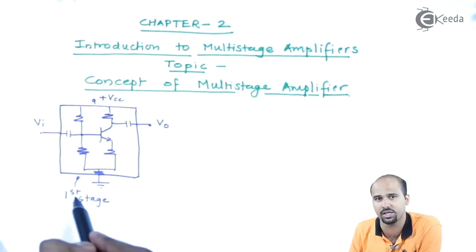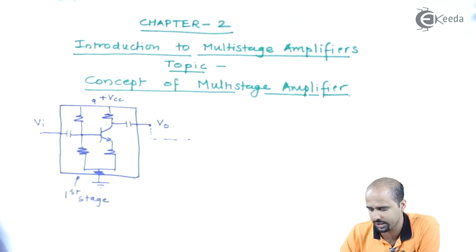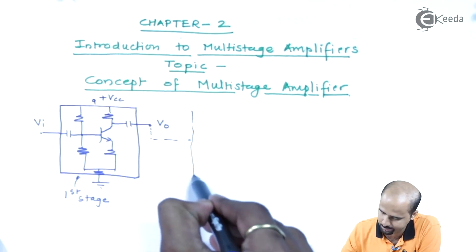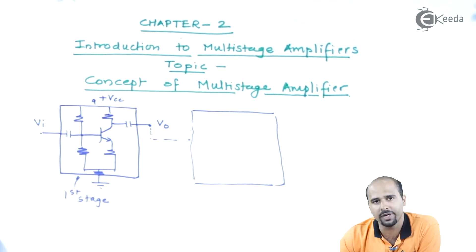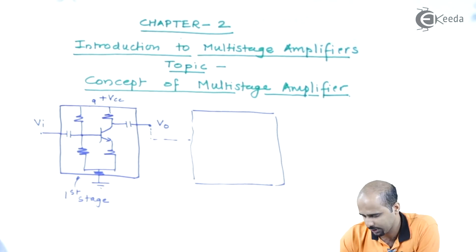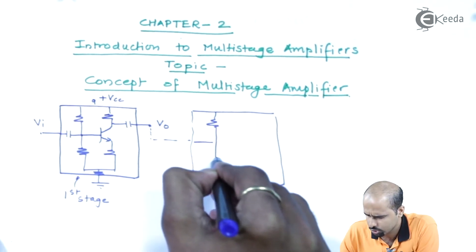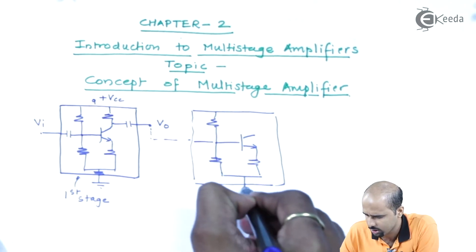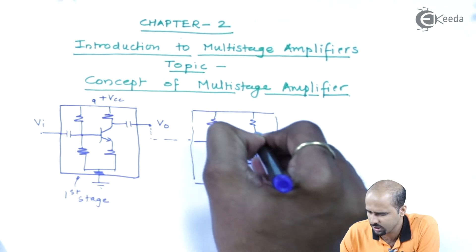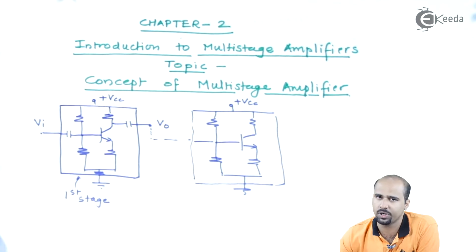This box represents the stage. If the output of this particular circuit is connected to the input of another box that will separately act as an amplifier — for example, I am using this BJT, I will use another BJT — that will be your second stage.